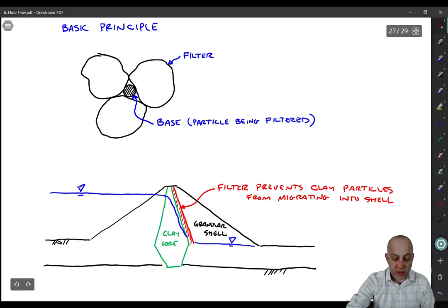This filter will hold back the clay core, but it will be adequately permeable. The water will drain out of the clay core into that filter and then into the granular shell. So really, it's kind of a sequence of filters going from the core into the shell.